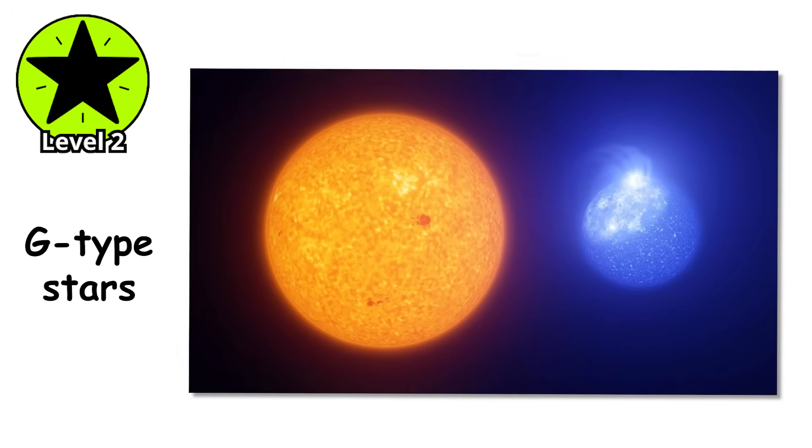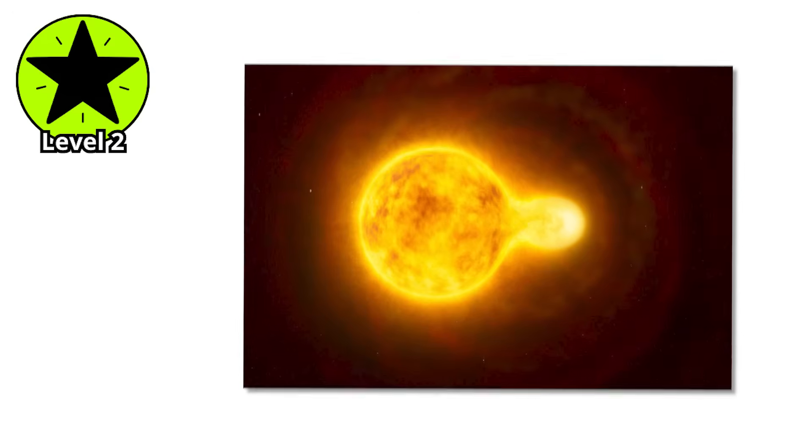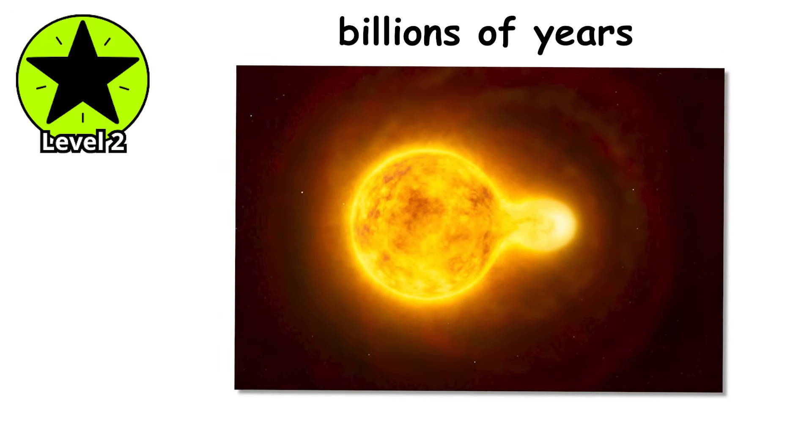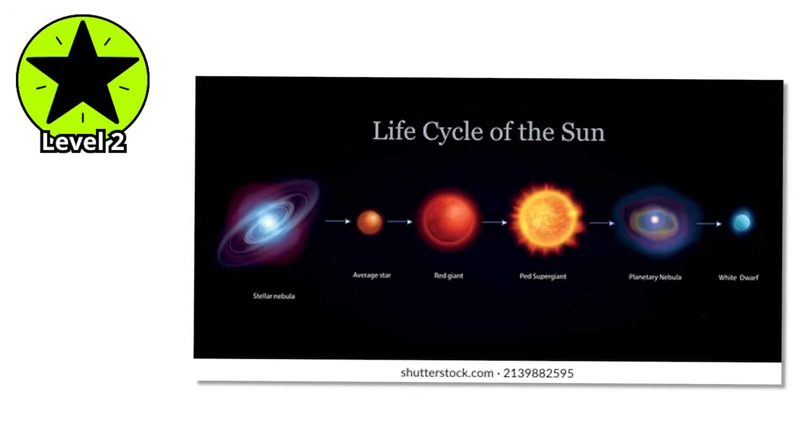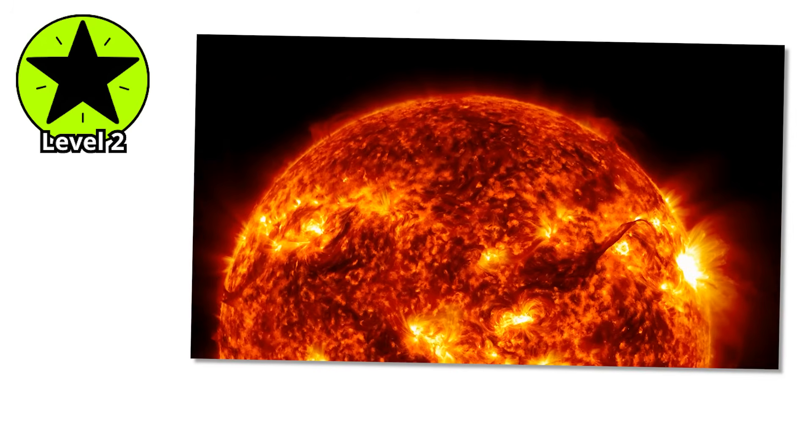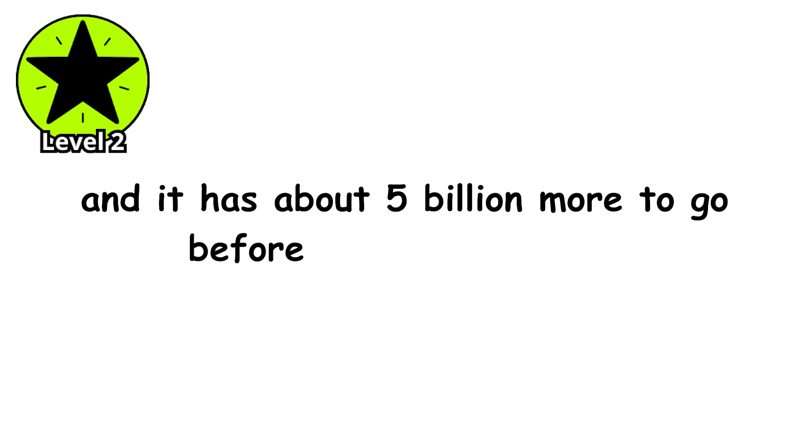G-type stars like our Sun occupy the sweet spot. Not too big, not too small, burning steadily for billions of years with just enough stability to allow complex life to evolve on orbiting planets. Our Sun sits almost exactly in the middle of its life cycle. It's been fusing hydrogen into helium in its core for 4.6 billion years, and it has about 5 billion more to go before things get weird.